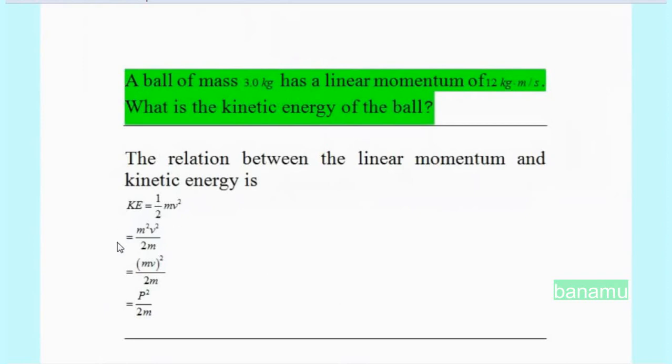KE equals m squared v squared by 2m, which equals mv whole squared by 2m. mv is the momentum of the particle, so KE equals p squared by 2m.